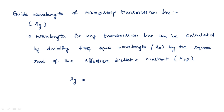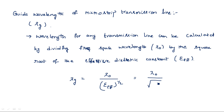So lambda G is equal to lambda naught divided by the square root of epsilon effective. This is the guide wavelength of the microstrip transmission line, and this is the first parameter.